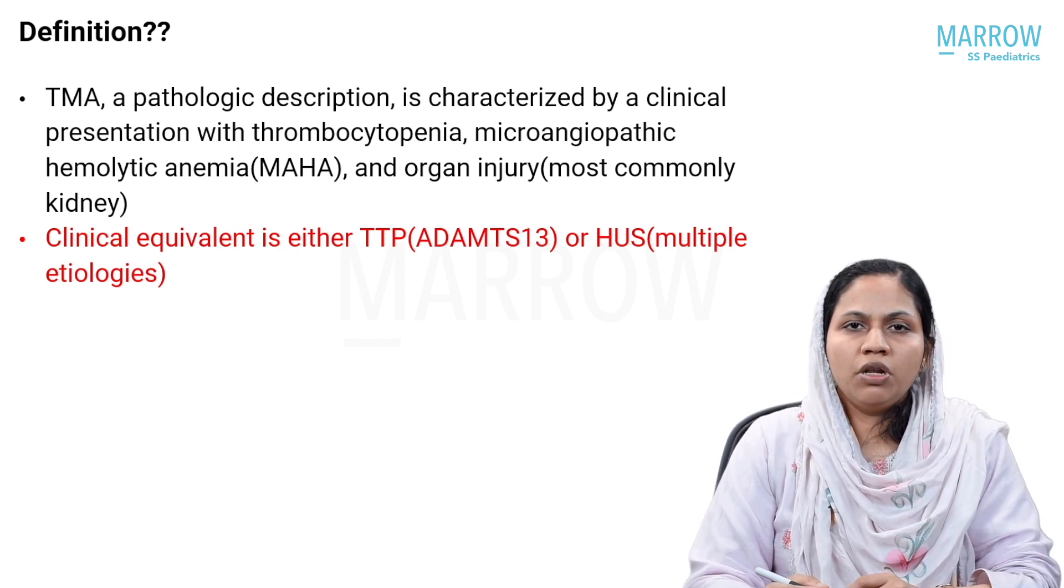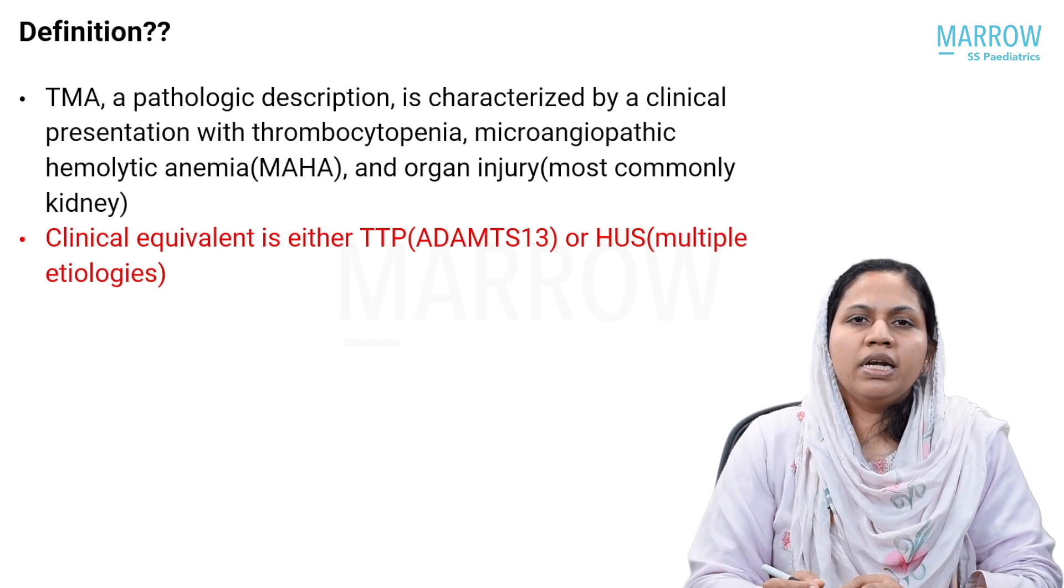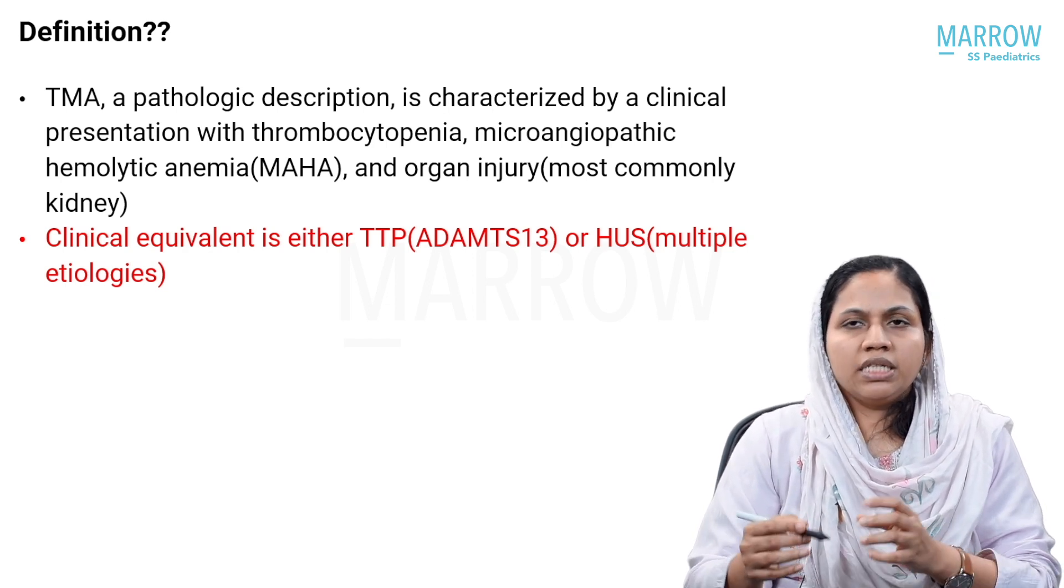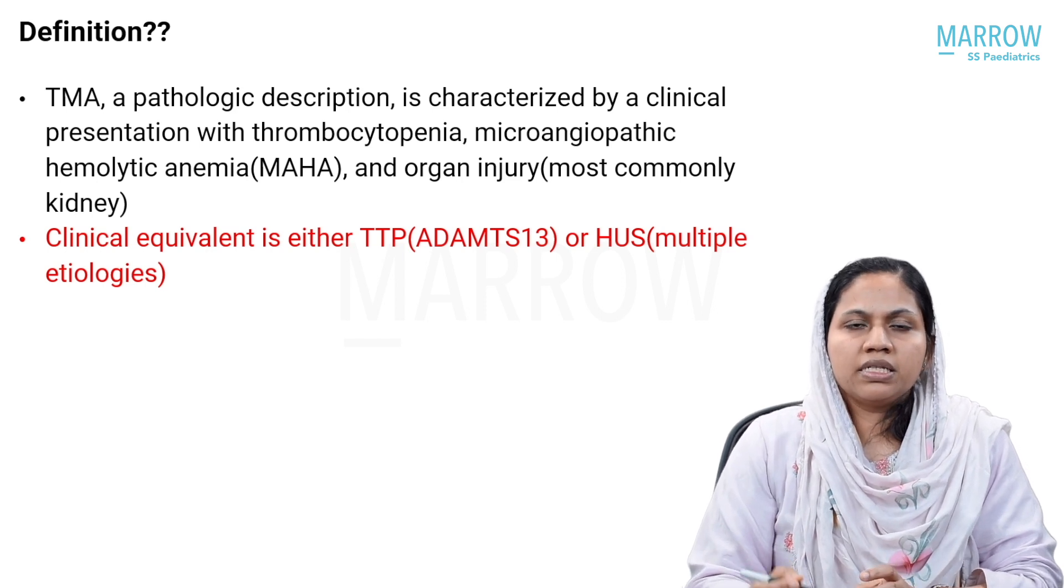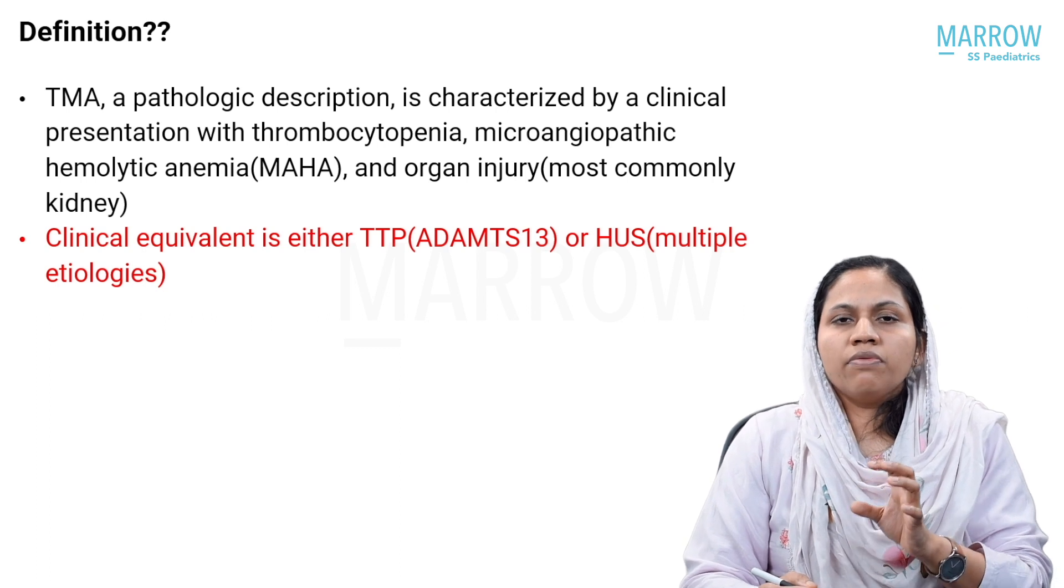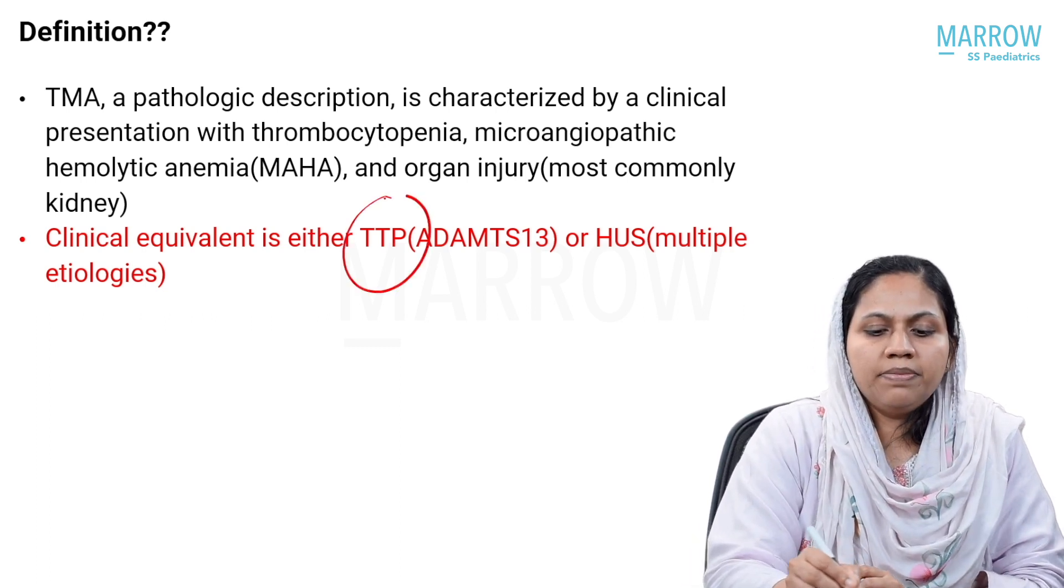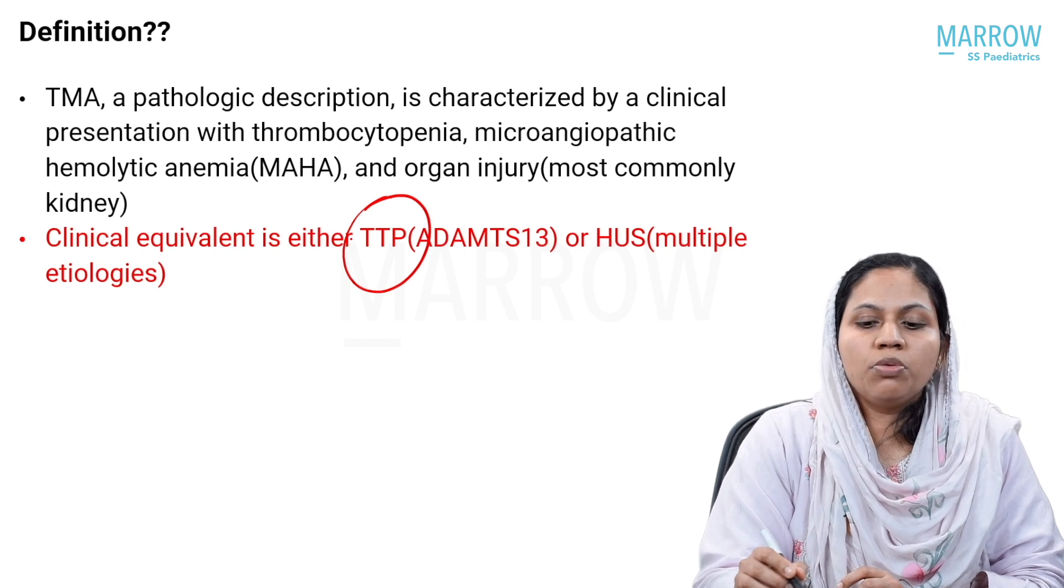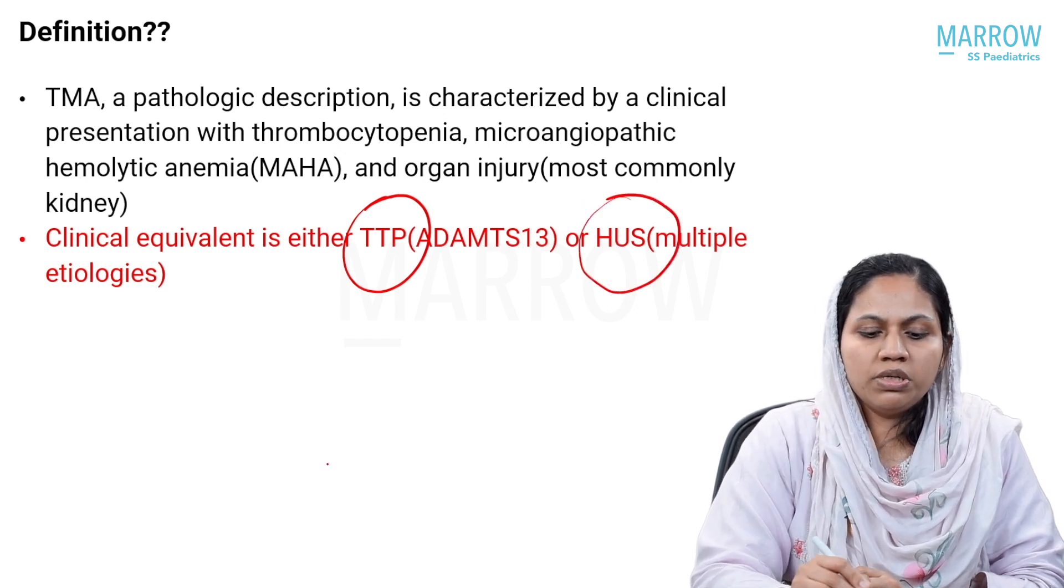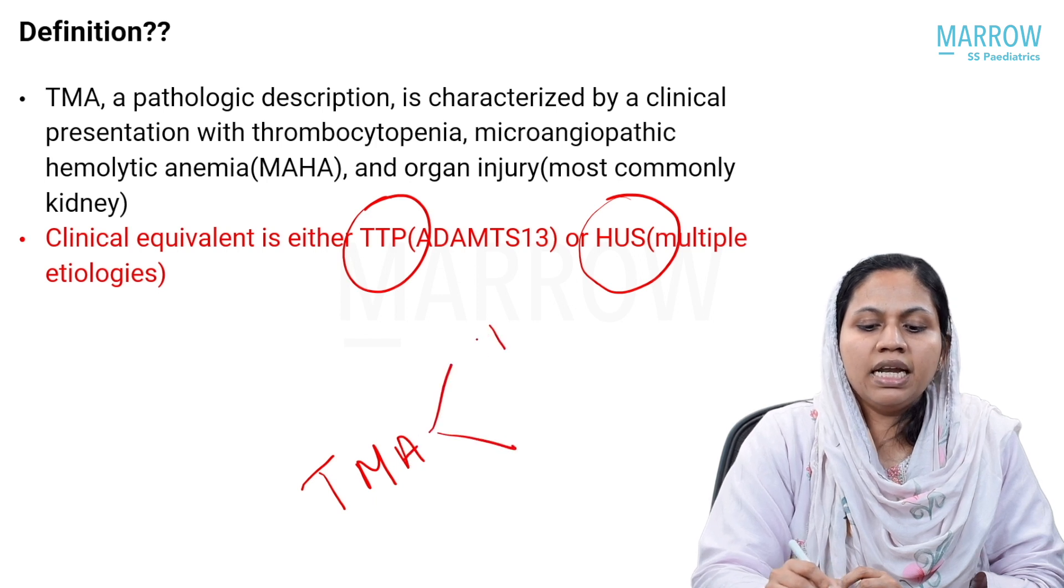And third being an organ injury, most commonly a kidney injury. It can be other organs like brain, pancreas, heart, etc. also. And what is the clinical equivalent of a TMA is either a TTP, that is thrombotic thrombocytopenic purpura, or HUS.